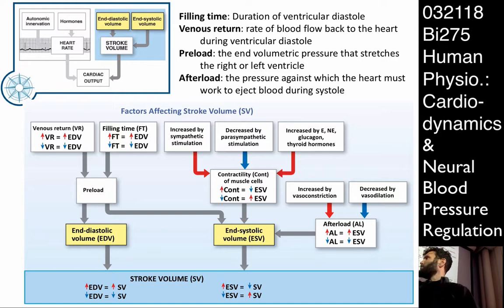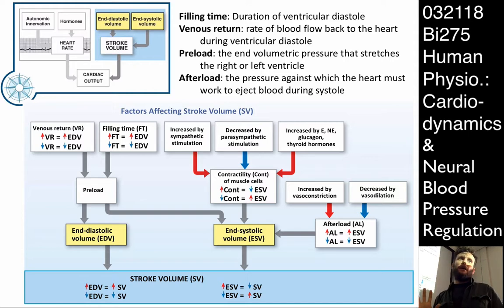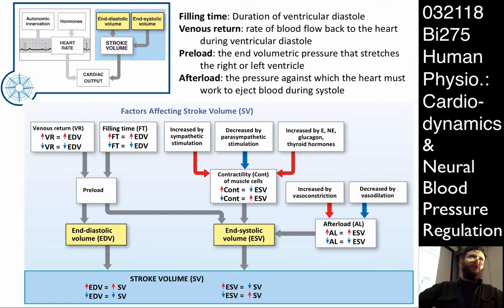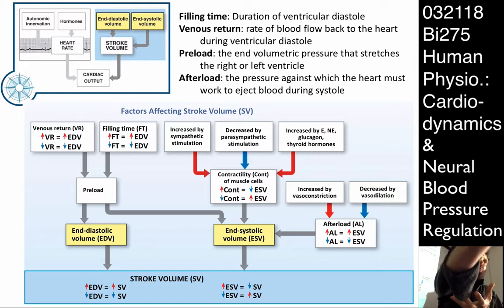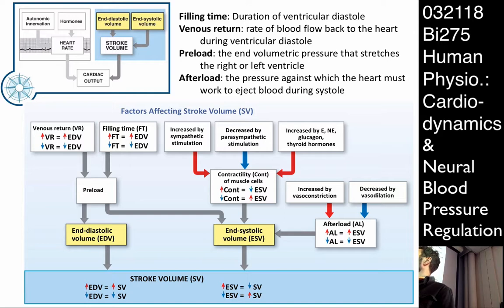End diastolic volume is principally a function of preload. Preload is really just the blood pressure in the venous circulatory system — the blood that's returning, the blood return. It's how much blood we're preloading into the heart before contraction. What things affect preload? A couple of different factors: either venous return or filling time.